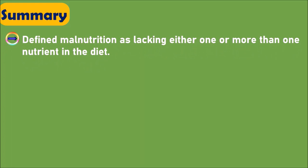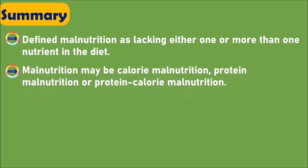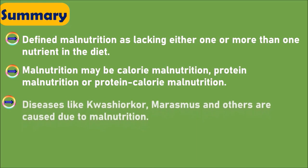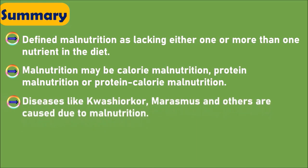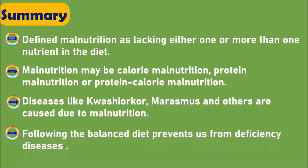Summary: With this video we have defined malnutrition as lacking either one or more than one nutrient in the diet. Malnutrition may be calorie malnutrition, protein malnutrition, or protein-calorie malnutrition. Diseases like Kwashiorkor, Marasmus, and others are caused due to malnutrition. Following a balanced diet prevents us from deficiency diseases.